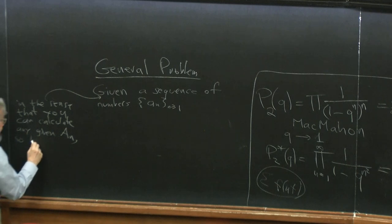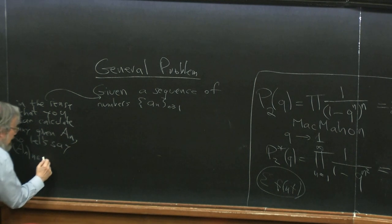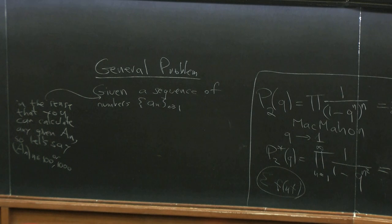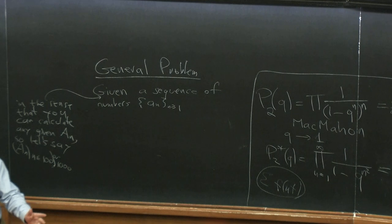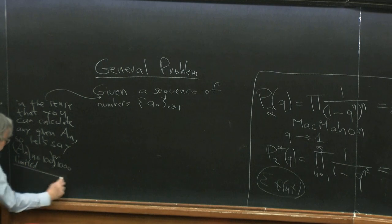You could compute a_n for n less than maybe 100, or maybe a thousand in another case. But I don't mean that you can compute a_n if n is 10 to the million — then you could just see the asymptotics — but typically we have a problem where it costs time on the computer to compute. If you let the computer run for half an hour, you get 100 values. If you let it run for a day, you might get a thousand values. But if you want a million values, you'd have to let it run for the rest of your life. So the question is you have a limited number — that's very important for the application, that you don't need a lot.